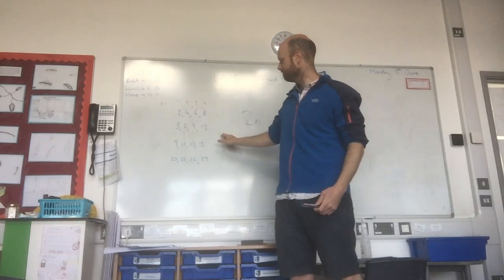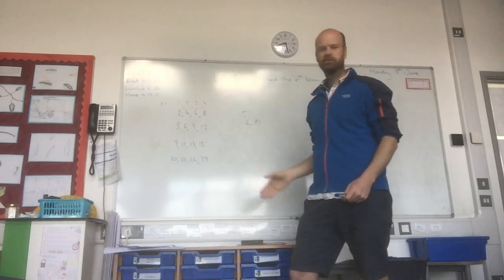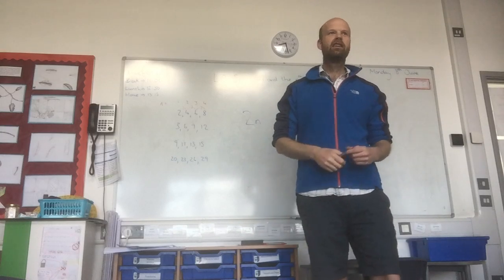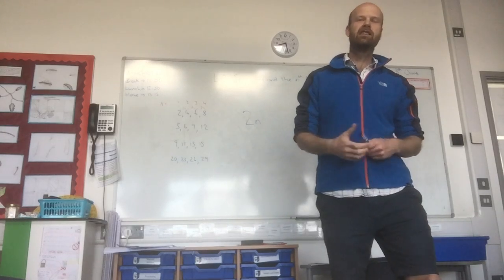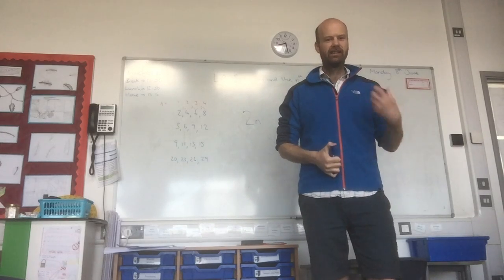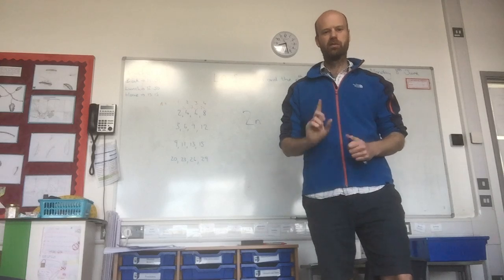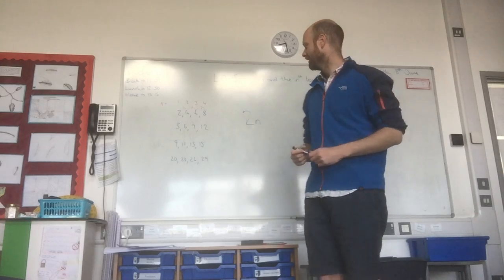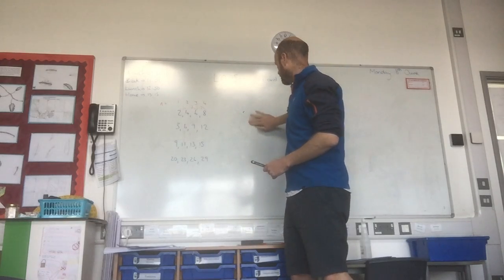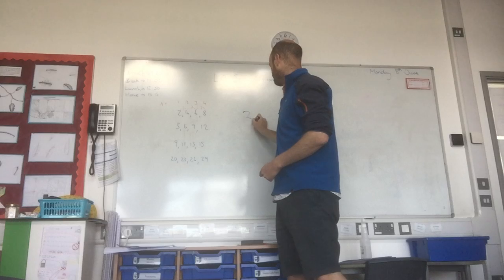The next one: 3, 6, 9, 12 — well, I'm sure you'll see quickly — 15, and then 18 would be the next two numbers. Again, it's going to be a straightforward sequence with one function. And in that case, it won't be 2n anymore, but it will be 3n.